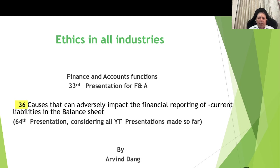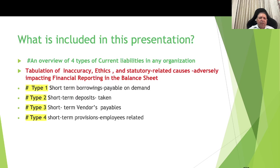What I plan to include is: number one, an overview of the four types of current liabilities in any organization, and a tabulation of three aspects — inaccuracy-related, ethics-related, and strategy-related causes — that can adversely impact the financial reporting in the balance sheet.